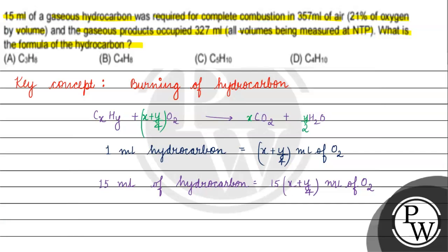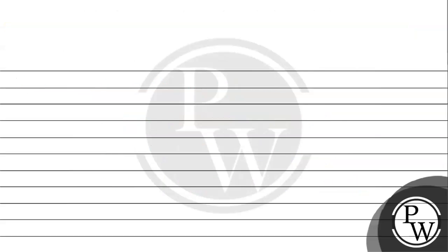Volume of air is 357 ml, which contains 21 percent oxygen. Volume of oxygen will be 357 ml times 21%, which is approximately equals to 75 ml.